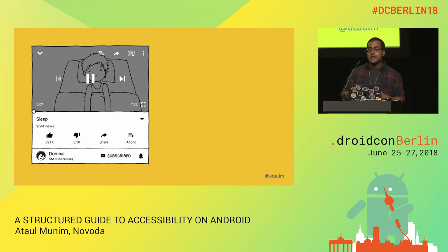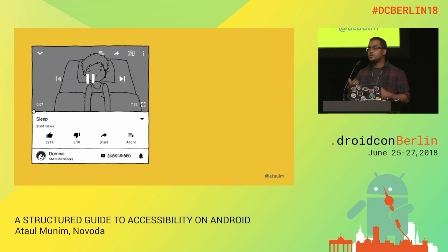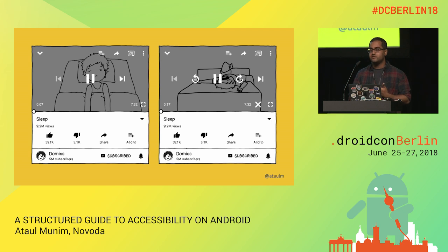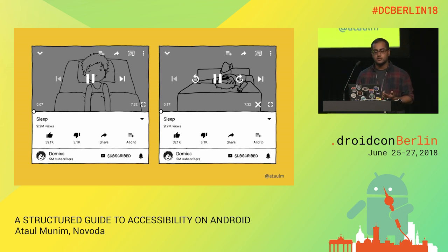Finally, you can also add actions to the UI where necessary. Consider the video controls overlay, which usually disappears after a few seconds. If TalkBack is enabled, YouTube avoids the auto-dismiss timeout — you can change behavior based on accessibility state. It adds an explicit dismiss button to the overlay so it stays on screen until the user explicitly dismisses it. In addition, because the seek bar controls are fiddly to use with TalkBack, there are additional rewind and forward buttons available.